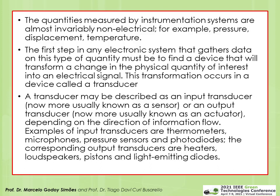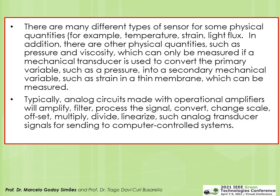The quantities measured by instrumentation systems include pressure, displacement, or temperature. We have transducers whose output is proportional to such variables. Input transducers could be thermometers, microphones, pressure sensors, or photodiodes. Outputs of the system could be a heater, loudspeaker, pistons, or LEDs. A computer must be prepared to interface with these different variables in domains that are not electrical.